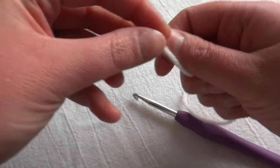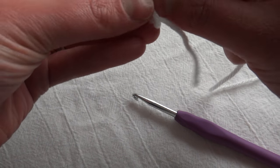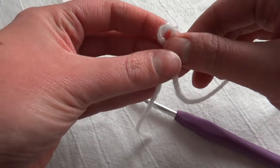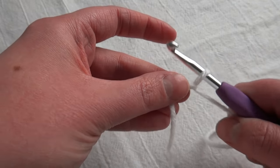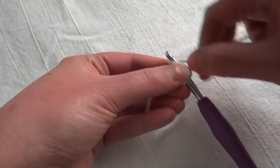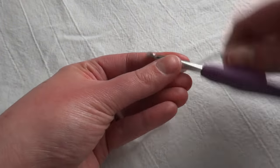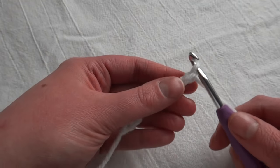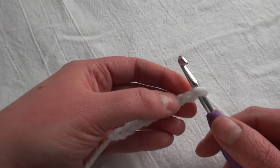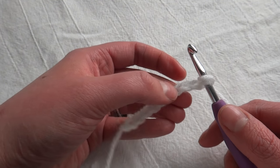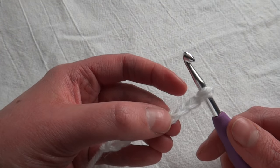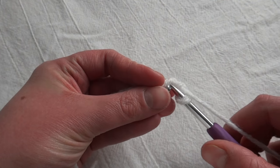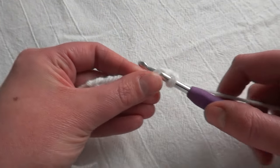Let's go ahead and get started with the cloud. You're gonna begin by chaining nine. So you'll just make your slipknot. So now we have nine chains and you're going to do a double crochet in the third chain from the hook. So you'll skip number one and number two, and then put your double crochet here. Yarn over.